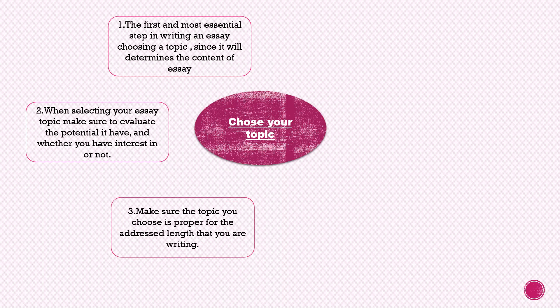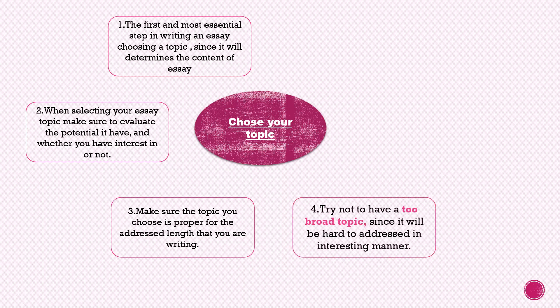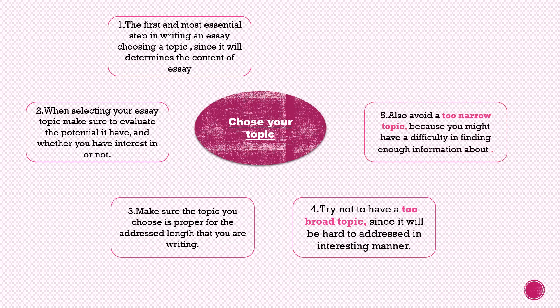Make sure the topic you choose is proper for the addressed length that you are writing. When you are writing an essay for, let's say, 3,000 words or 500 words, you need to choose a topic that is proper for that word count. Try not to have too broad a topic, because it will be hard to talk about in an interesting manner — it will have too many aspects and sides. Also try to avoid a too narrow topic, because you might have difficulty finding enough information about it.